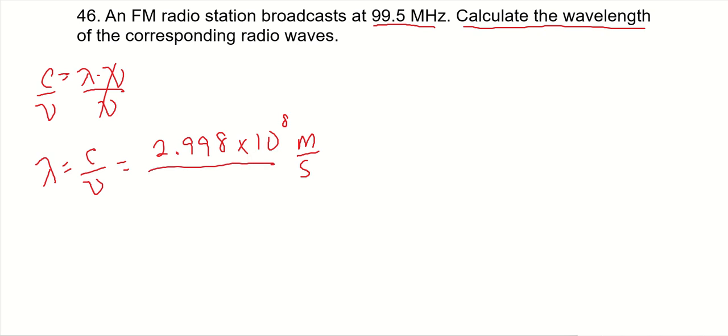And frequency is given up here. Now mega is a million times, so 99.5 megahertz is also the same thing as 99.5 times 10 to the 6 hertz. And let's just replace that hertz unit with 1 over second, so it cancels out with the unit in our problem.